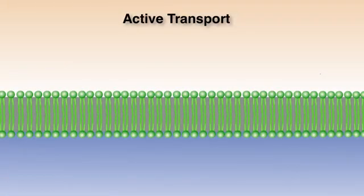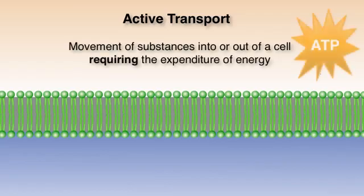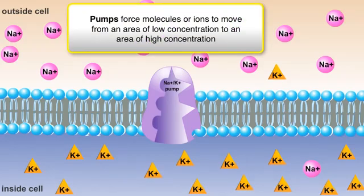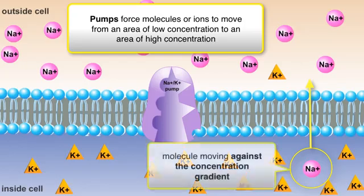Active transport is a type of cell transport that requires the input of energy in the form of ATP. The proteins that conduct this form of transport are often called pumps because they force molecules or ions to move from an area of low concentration to an area of high concentration. This is commonly referred to as against the concentration gradient.